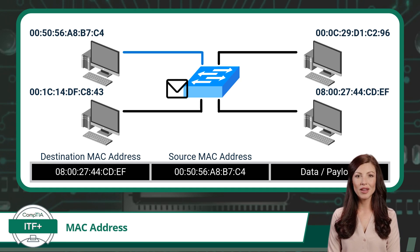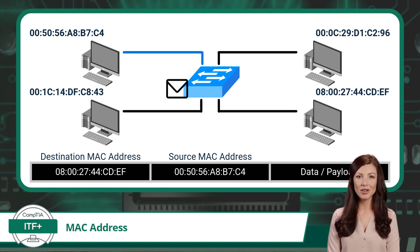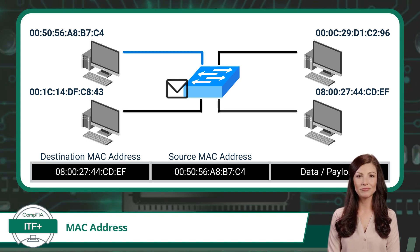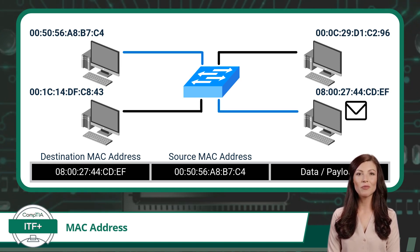The data packet is then sent out of the workstation's network interface card to the network switch. The switch determines which network path to use to reach the device matching the destination MAC address in the Ethernet frame. If everything goes right, the data packet will finally be delivered — all thanks to the help of MAC addresses.